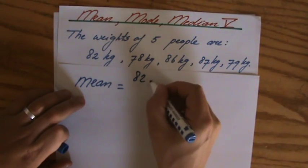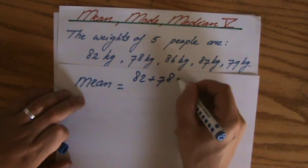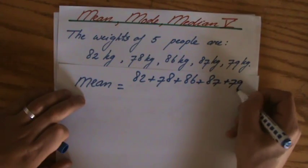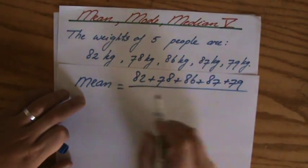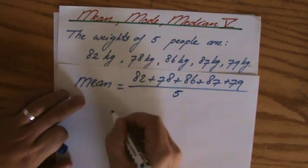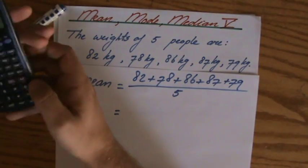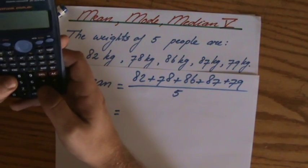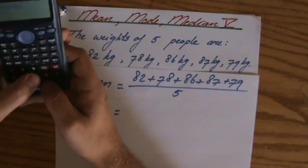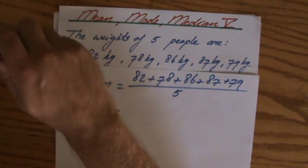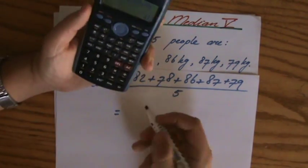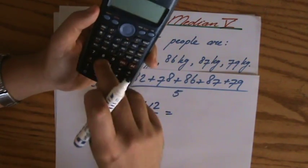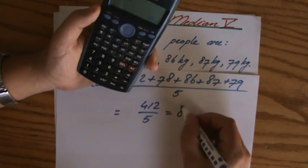Because the mean is 82 plus 78 plus 86 plus 87 plus 79, the sum of all the values divided by the amount of values. And those are five people. So I can calculate the mean and it's going to give me points. So we like points and the examiner likes to give you points. So let's work together and do that. 79 equals, of course we have to show as much workings as we can. 412 over 5, divide that by 5 is 82.4.